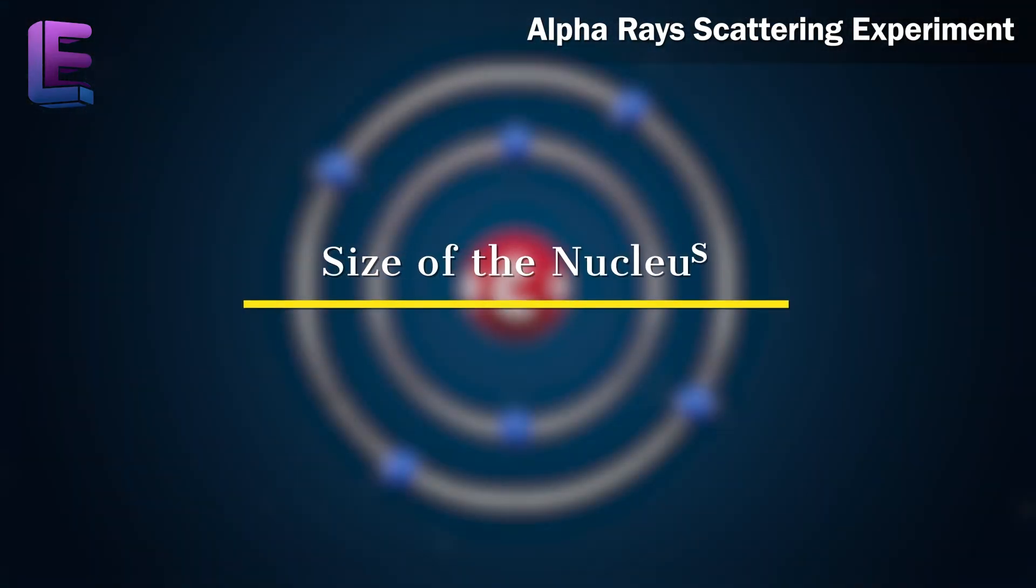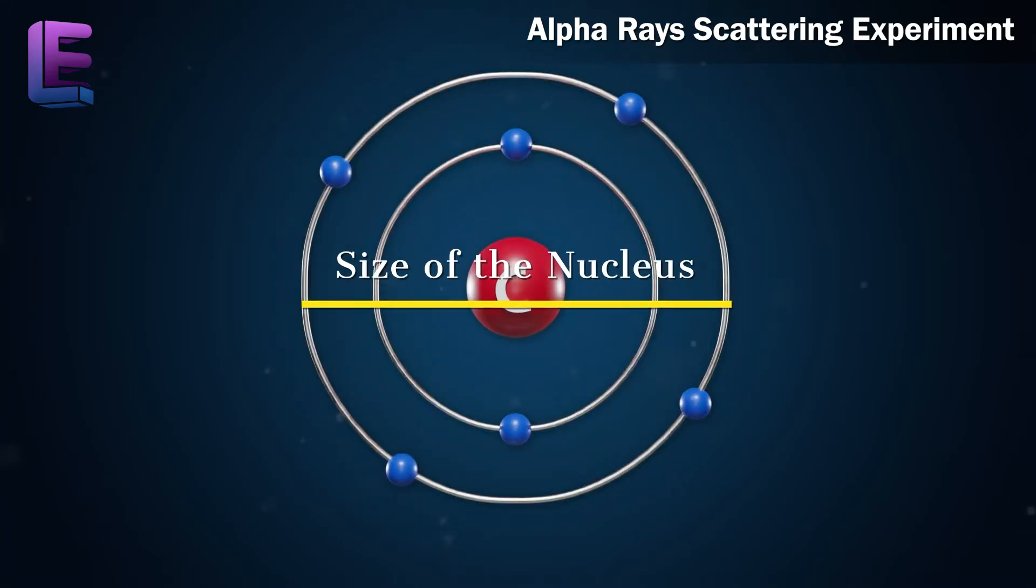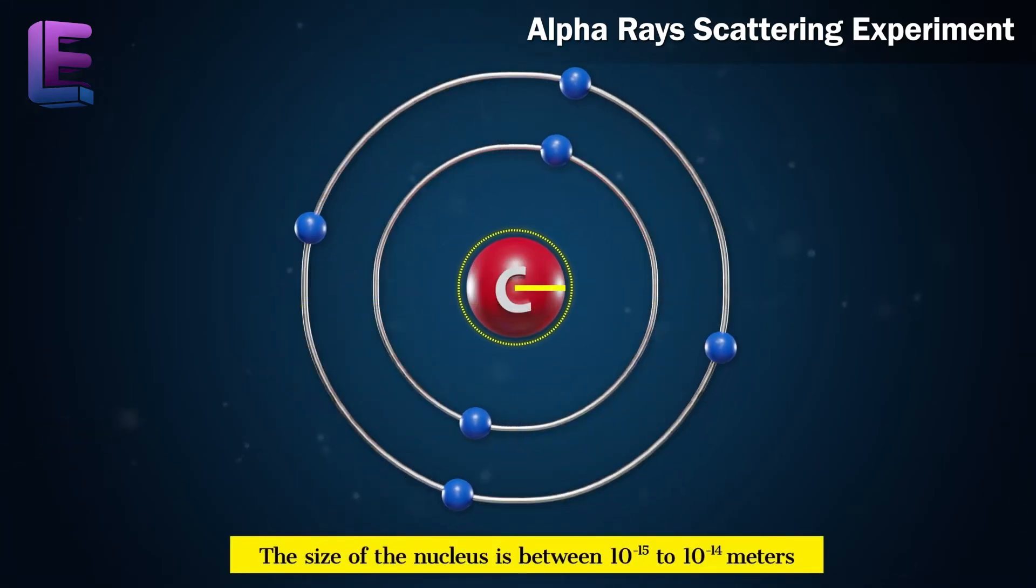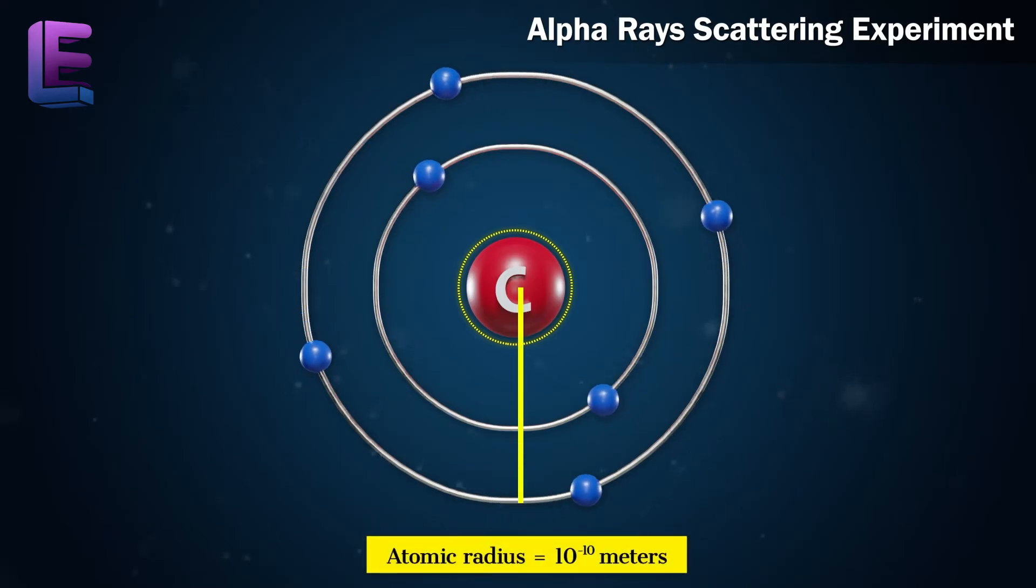Size of the nucleus. The size of the nucleus is between 10 to the power of minus 15 to 10 to the power of minus 14 meters. The atomic radius is 10 to the power of minus 10 meters.